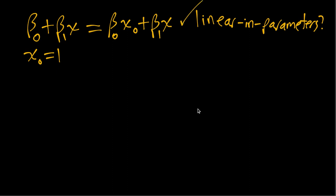And then similarly for linear in variables, we would ask is this a linear combination of x naught and x. And again the answer is yes. Here now we're seeing the beta naught and the beta one as the weights in the linear combination of x naught and x. So this function is both linear in parameters and linear in variables.